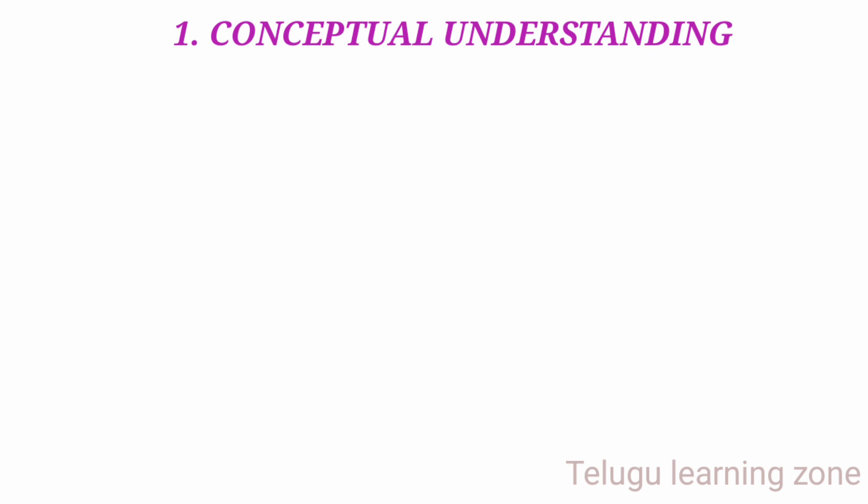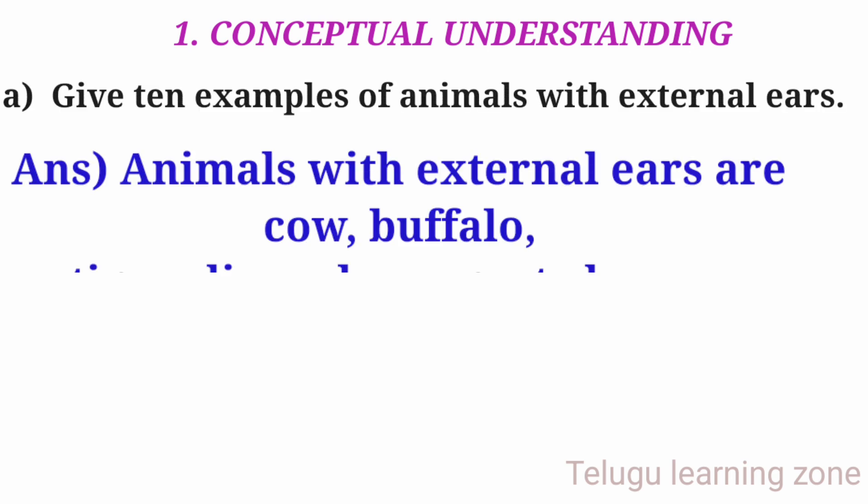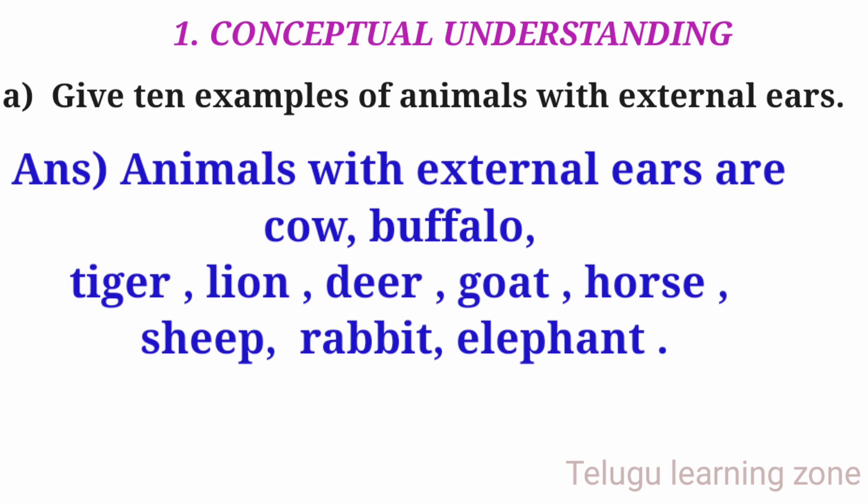Conceptual Understanding. Question A: Give 10 examples of animals with external ears. Answer: Animals with external ears are Cow, Buffalo, Tiger, Lion, Deer, Goat, Horse, Sheep, Rabbit, Elephant.